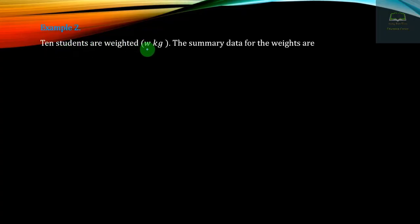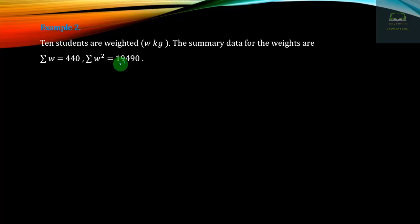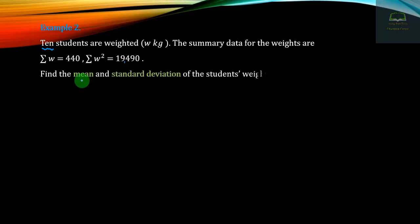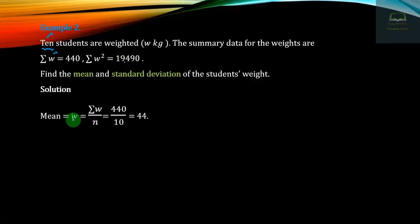For the next problem, the summary data for the weights are: summation W equals 440, and summation W squared equals 90,490. The mean is calculated using summation W divided by n. To find the standard deviation, we use the variance sigma squared formula based on the weighted summation.